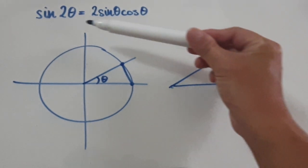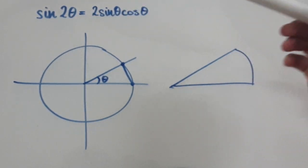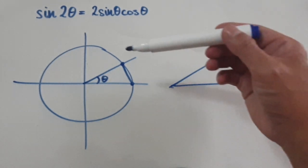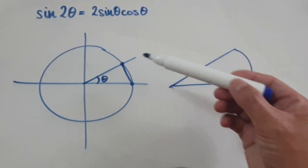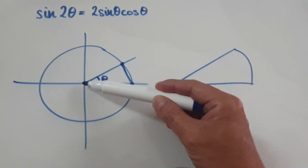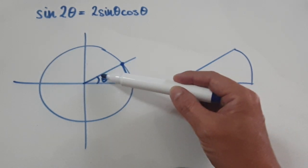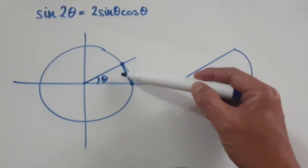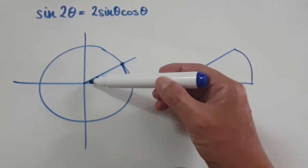In this video we're going to try and prove this identity — it's very useful when you get to about 16 years old. Consider a circle of radius 1, so from here to here would be 1, from here to here would be 1. Try and work out the area of this triangle.